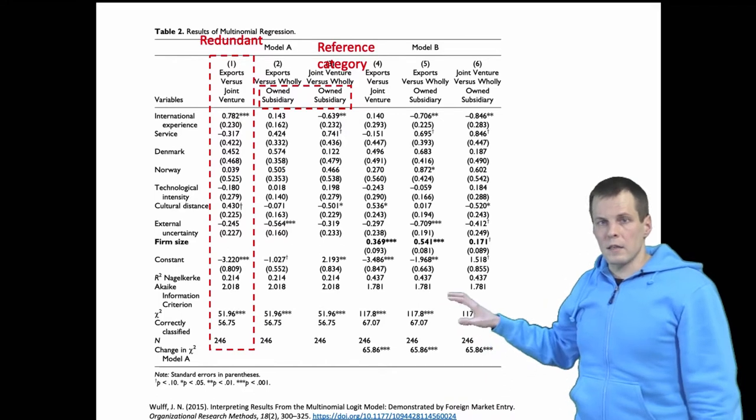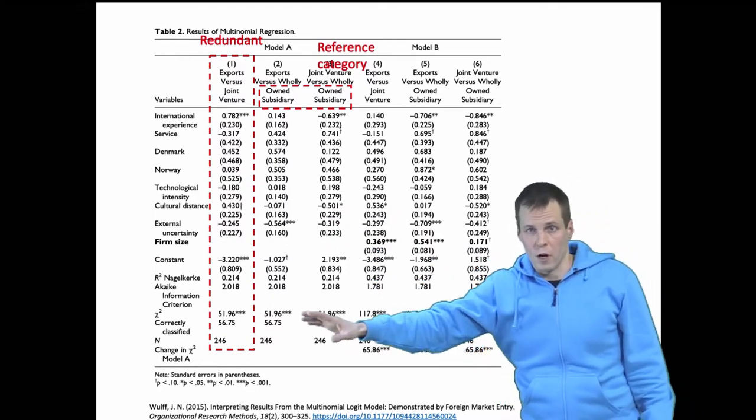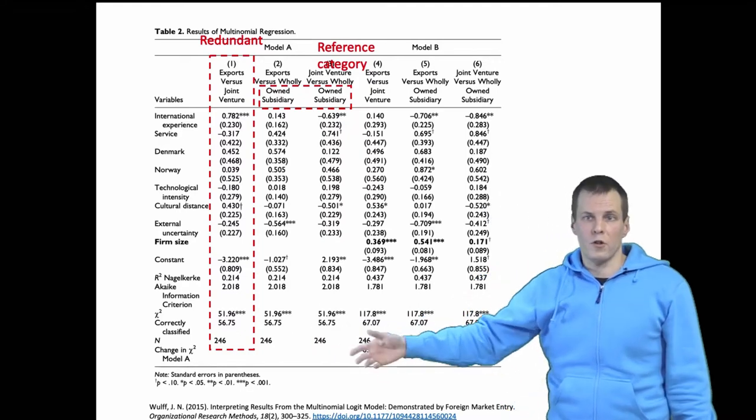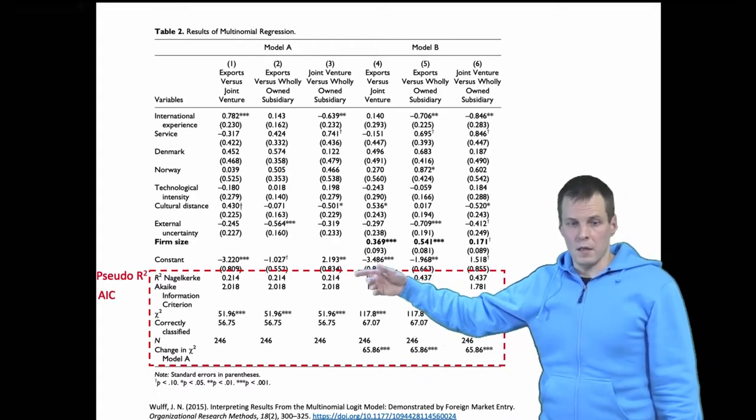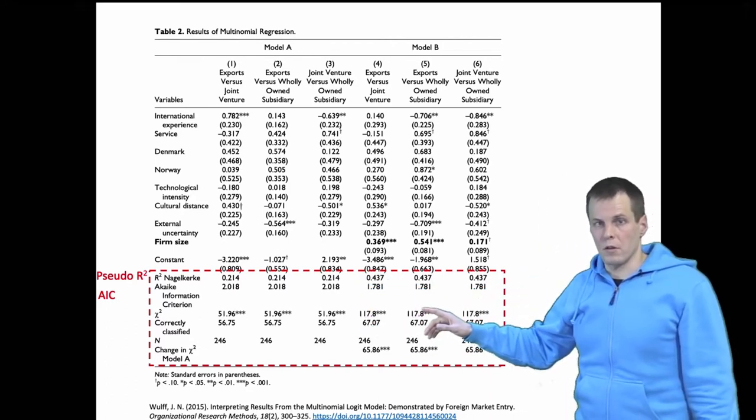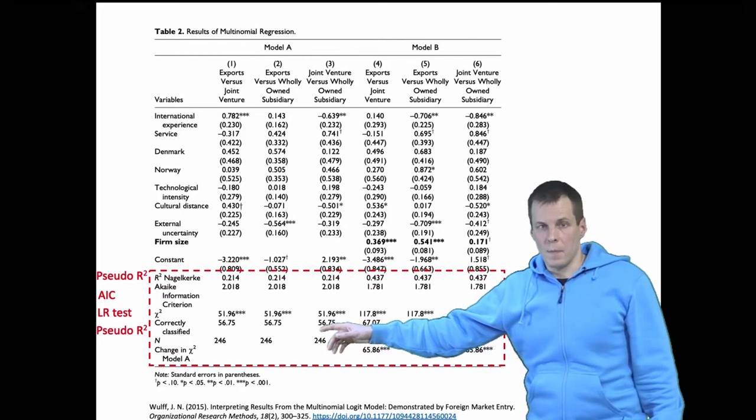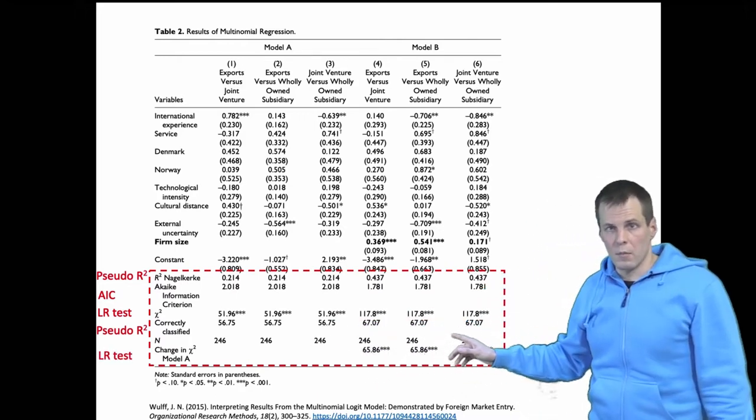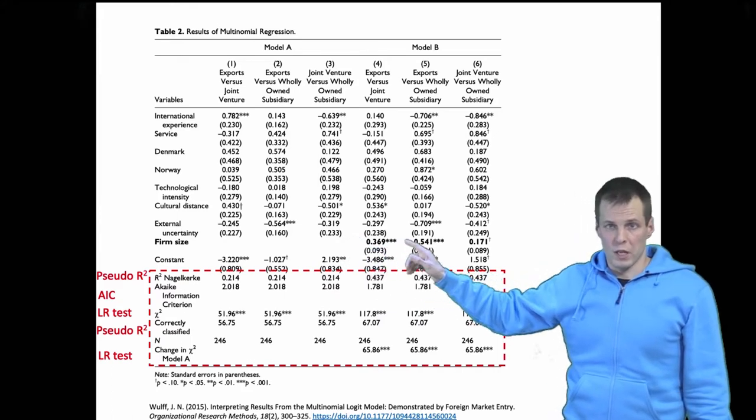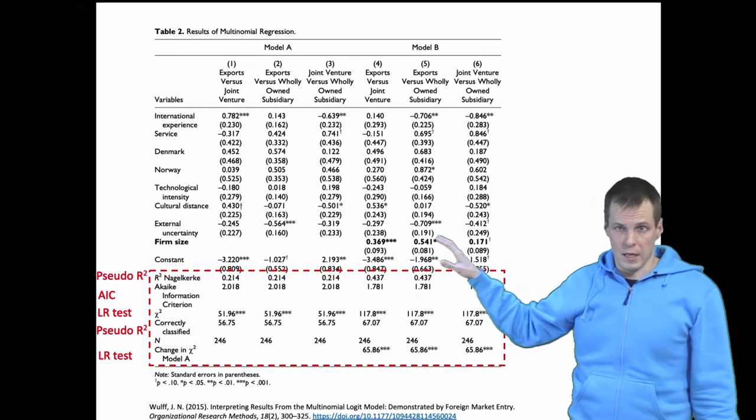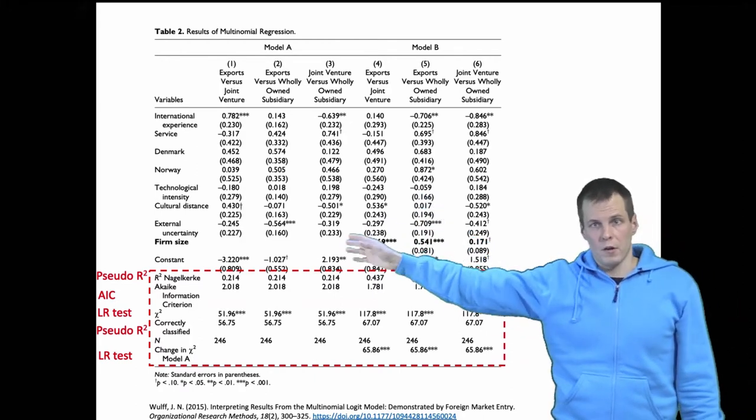When we look at the model indices, they're just repeating. This is one model and this is another model. They're repeating the indices for the first model for every single equation in that model. The indices are pseudo R-square, AIC, likelihood ratio test comparing the null model against the new model, classification rate, and then the likelihood ratio test between these two models. Does model B explain the data better than model A that doesn't have the firm size variable? The logic of using these models is the same as any other models. You have the control variables only model, then the interesting variable and the controls model, then you compare using nested model comparisons.